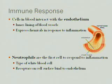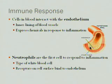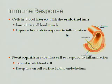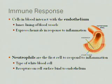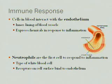First I'm going to talk a little bit about the immune system. Cells in the blood interact with the endothelium, and in a normal human artery — shown in this visual — you can see the inner lining is the endothelium. It's the inner lining of blood vessels and it expresses chemicals in response to inflammation. I'm specifically looking at neutrophils, which are cells in the blood and the first cell to respond to inflammation. Neutrophils are a type of white blood cell and they have receptors on the surface of their cell, and those receptors bind to the endothelium.